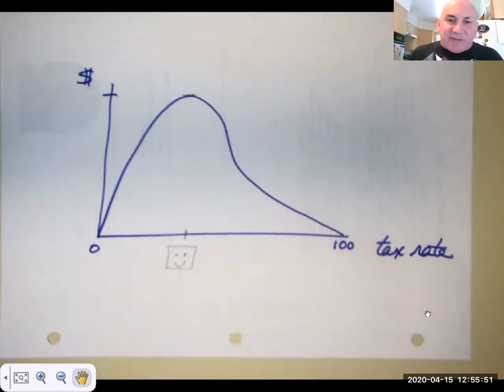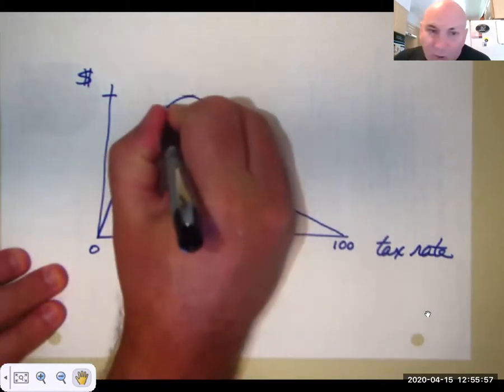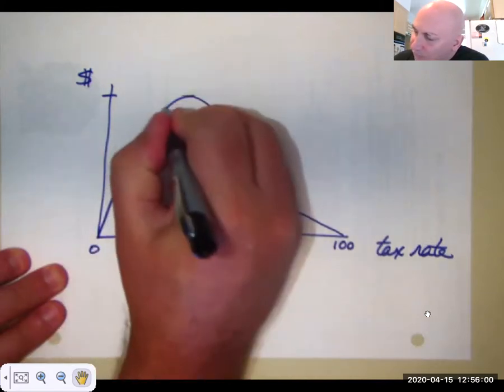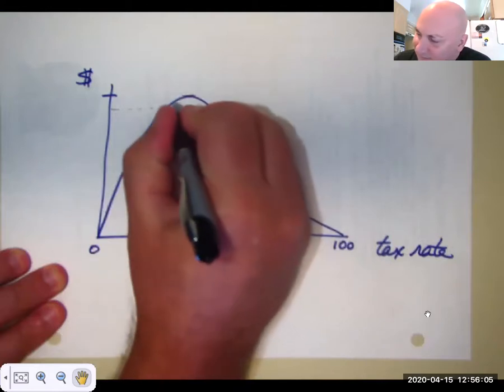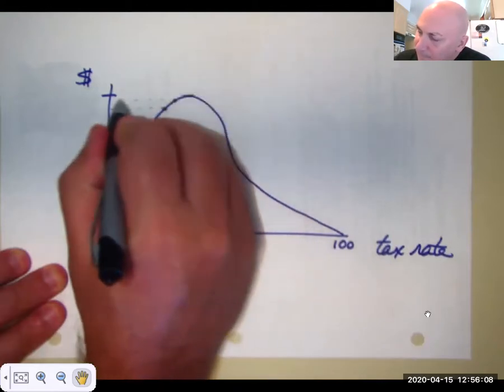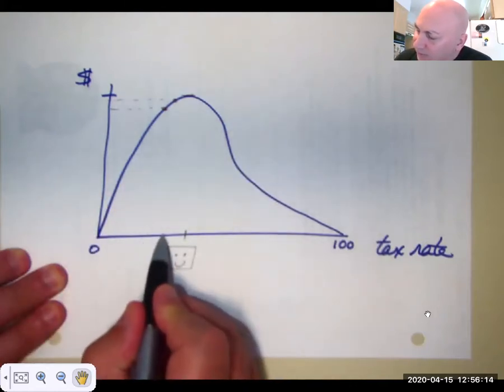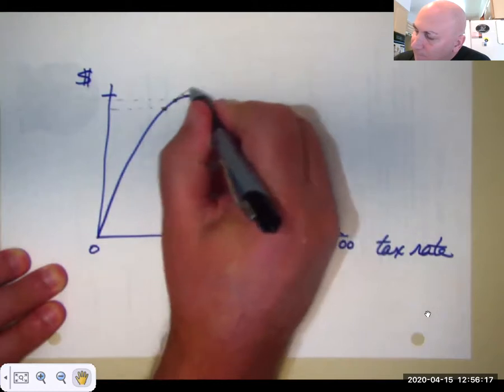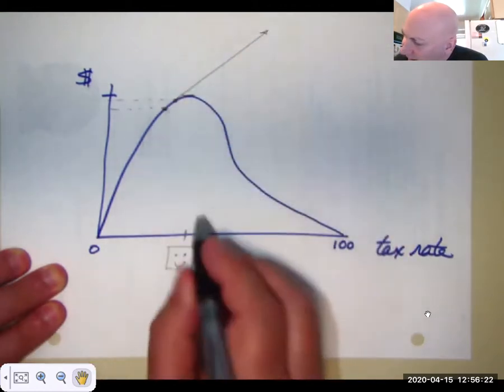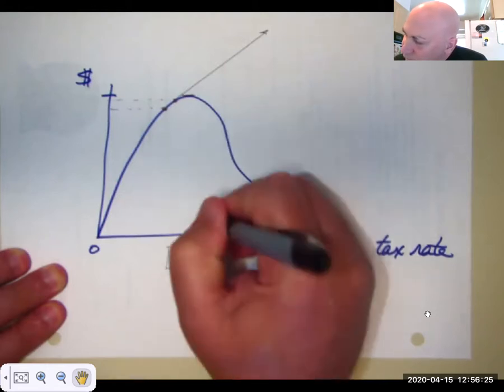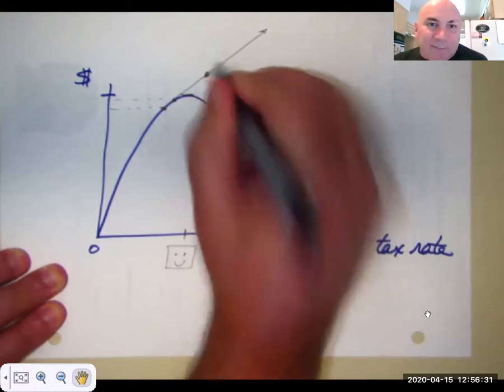Let's just assume that the curve looks like this. What some politicians will do is they'll say well when the tax rate was here we got this much money. When we raised taxes we got this much money. So we raise taxes from here up to here. We're going to extrapolate and if we raise taxes over to here we should get this much money.